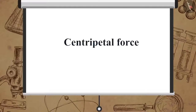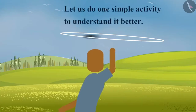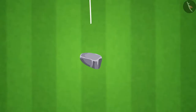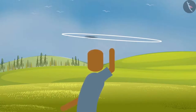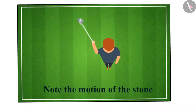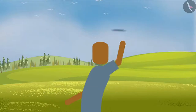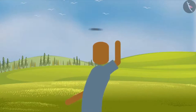Now let us try to understand centripetal force. Let us do one simple activity to understand it better. Take a piece of thread and tie a small stone at one end. Hold the other end and whirl it in a horizontal circle. Note the motion of the stone. Release the thread, but only after ensuring that no one is around you.